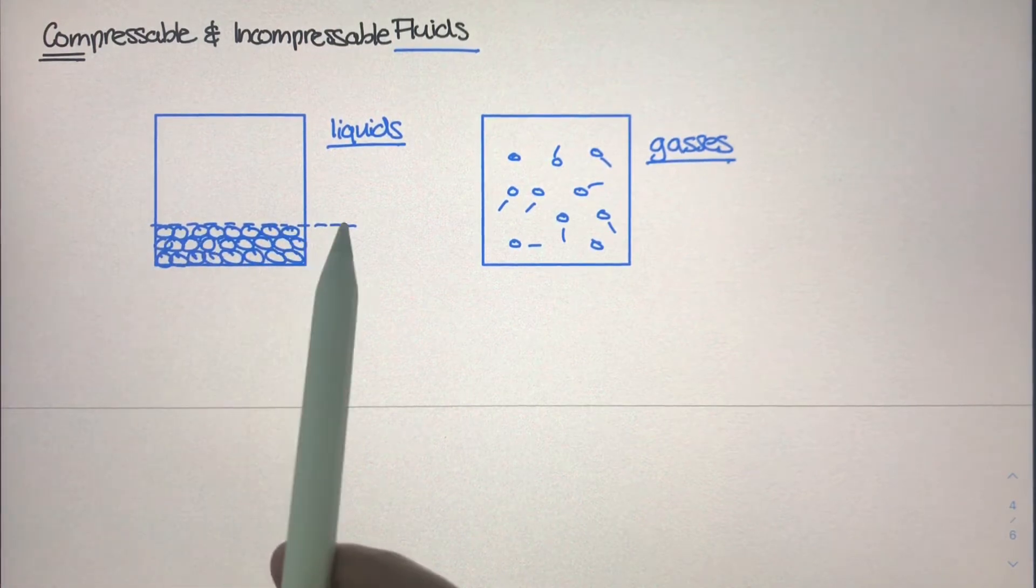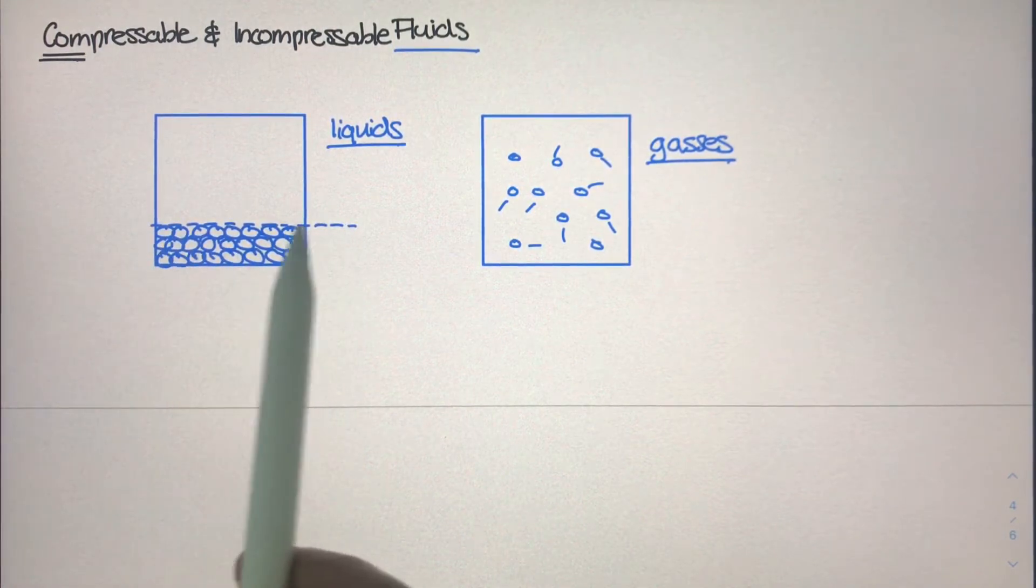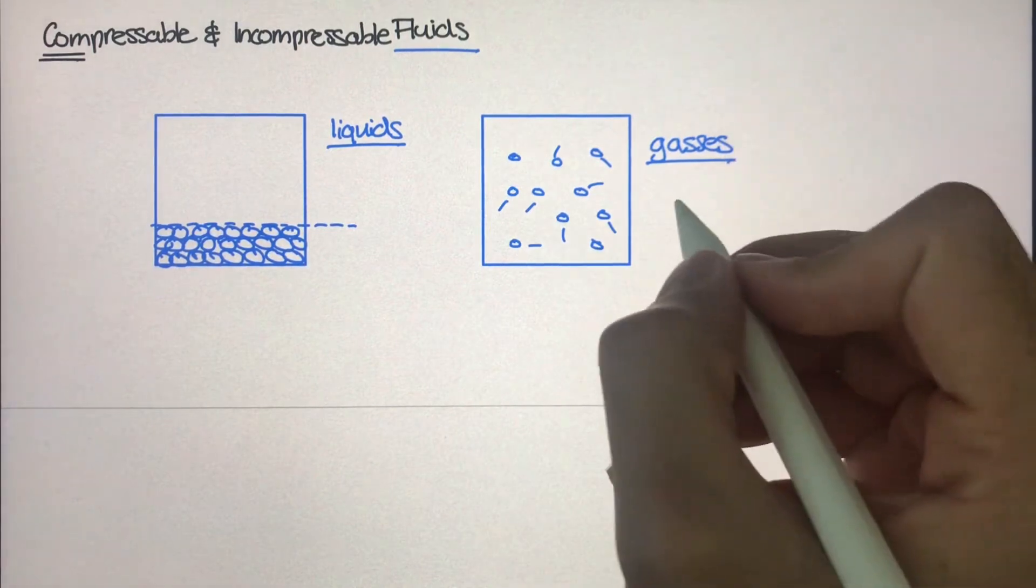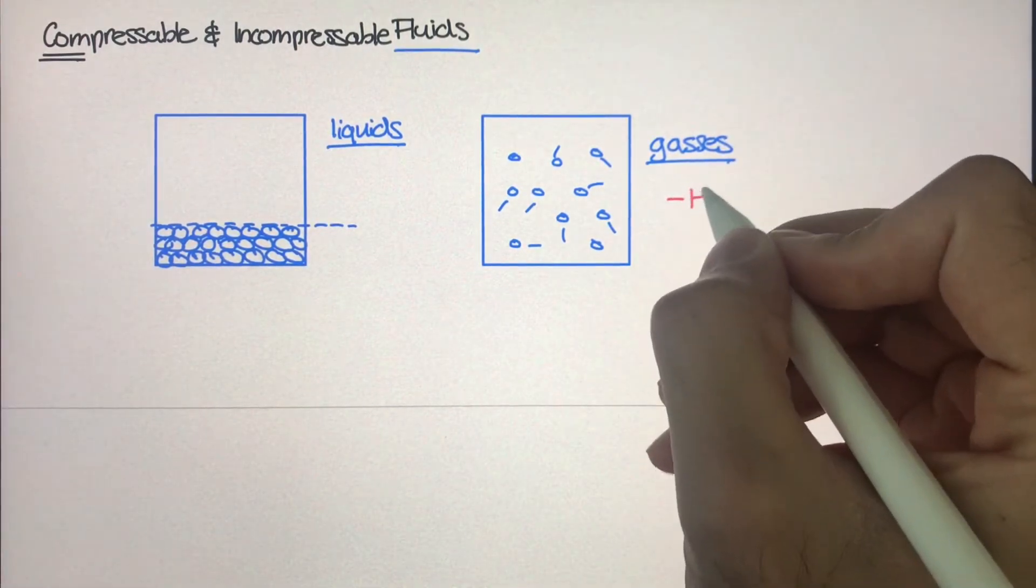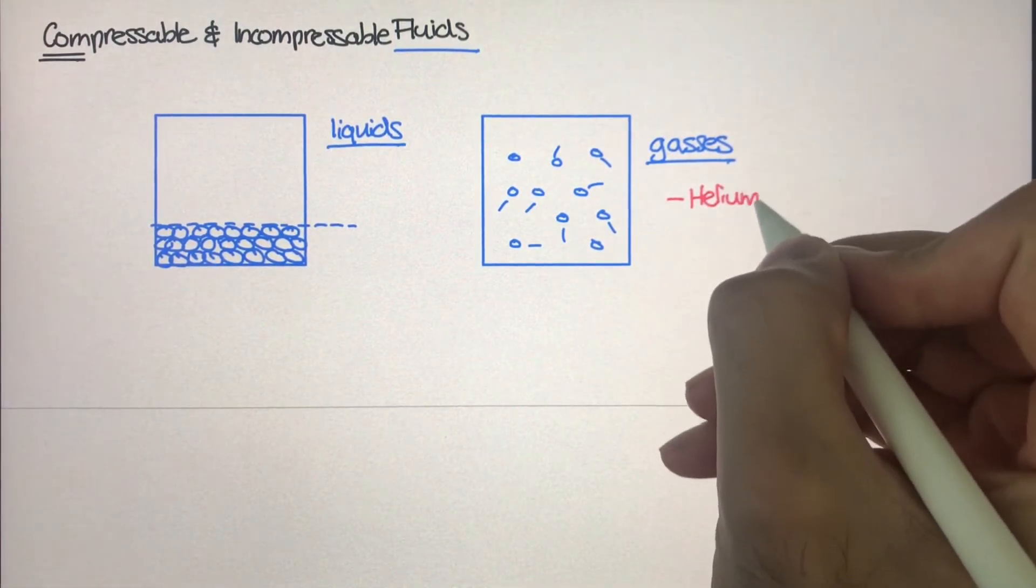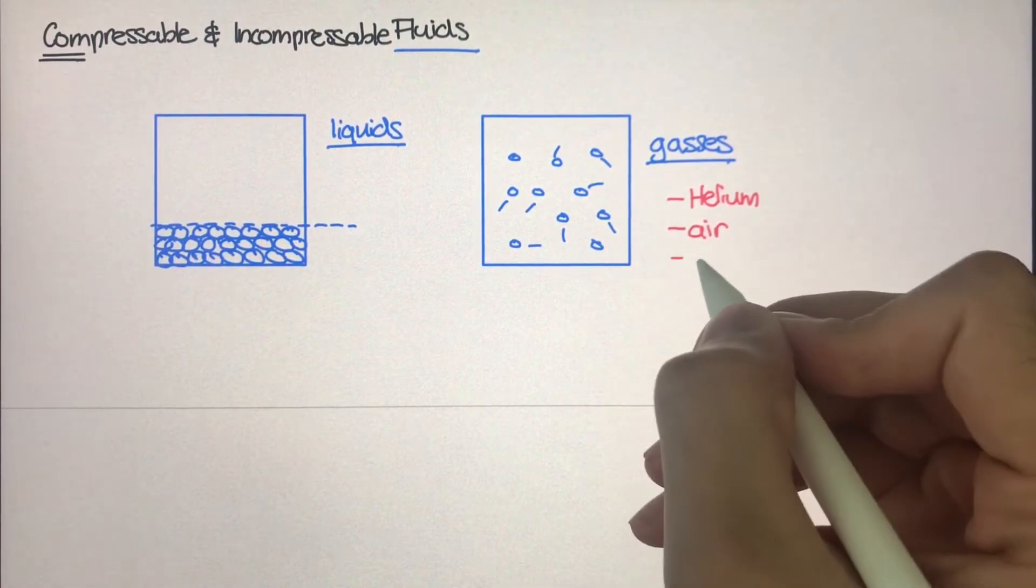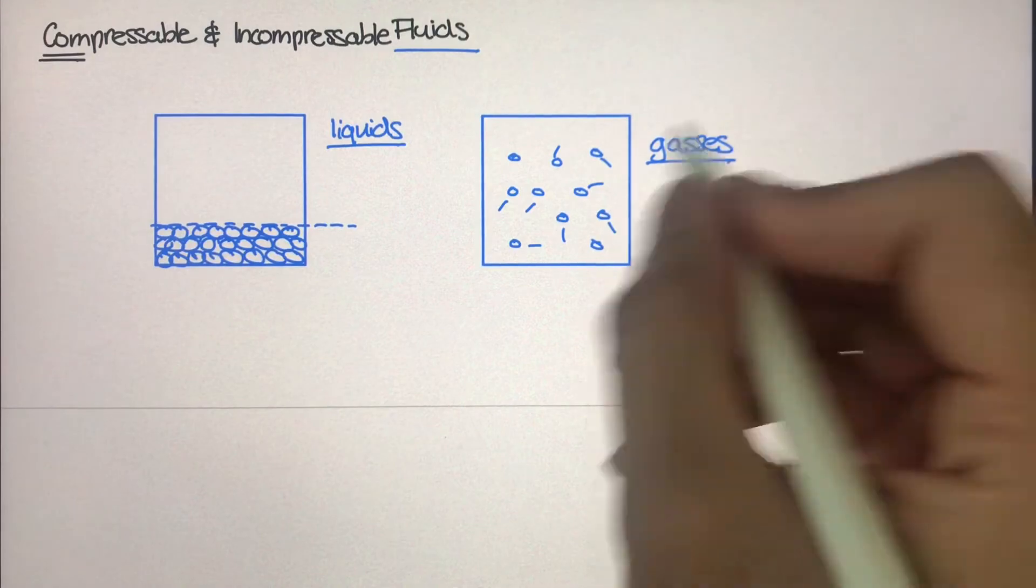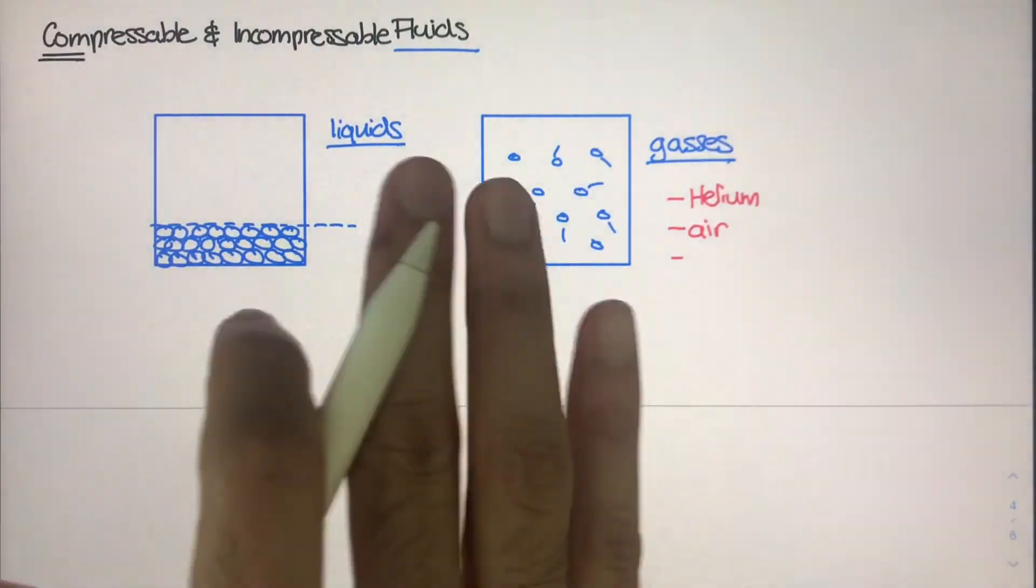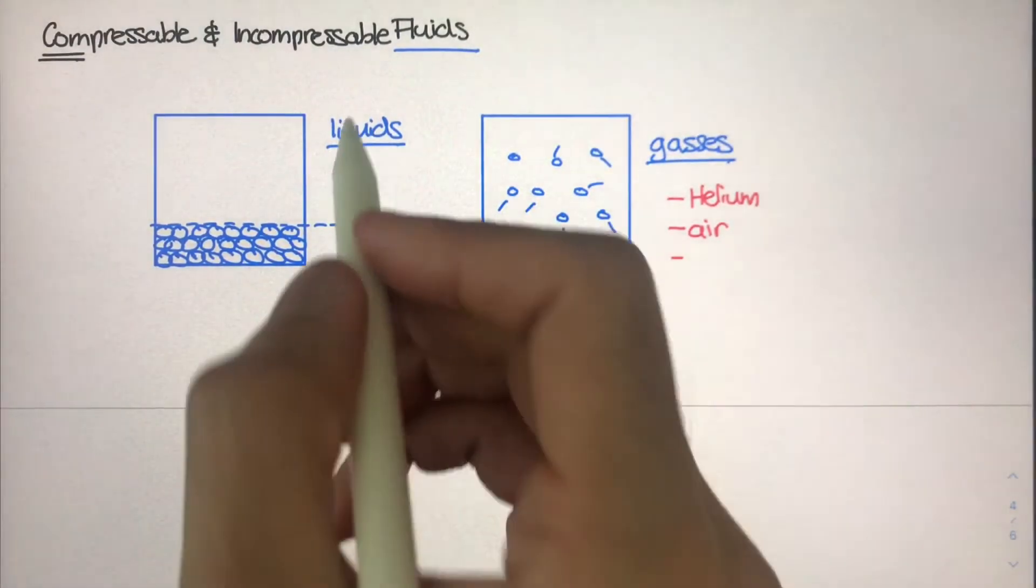So examples of gases: obviously you know helium if you pumped helium into a balloon, the air that we breathe, nitrogen, oxygen—all that stuff. Those are gases because they take up space freely in the container.